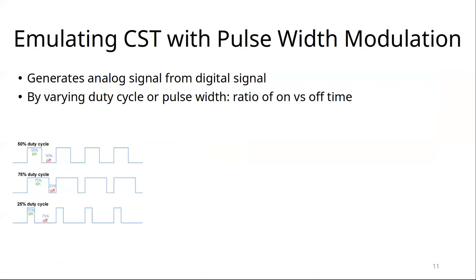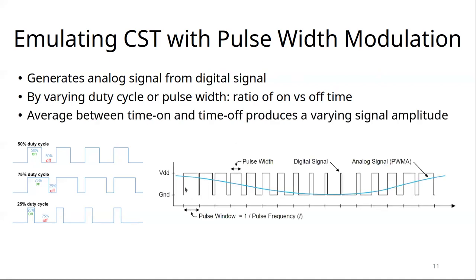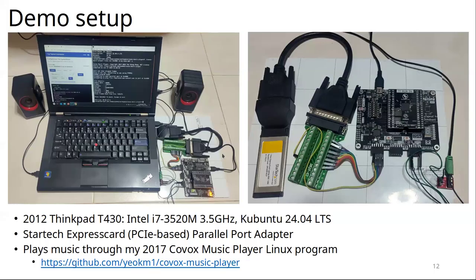One problem was that Tiny Tapeout at that time didn't support analog — only purely digital. So how do you get analog from digital? The concept is called pulse-width modulation: you vary the amount of time the signal is on versus off — that ratio is called the duty cycle. The average of this duty cycle gives you an analog equivalent. To demonstrate this, I have my ThinkPad T430 — over 10 years old, running Linux — connected via an ExpressCard-to-parallel-port adapter.